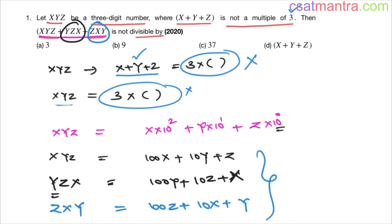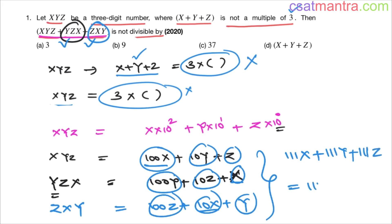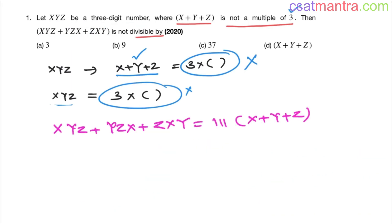Adding these three numbers: (100x + x + 10x) + (10y + 100y + y) + (z + 10z + 100z) = 111x + 111y + 111z = 111(x + y + z).